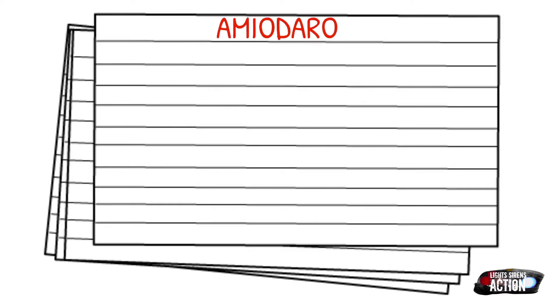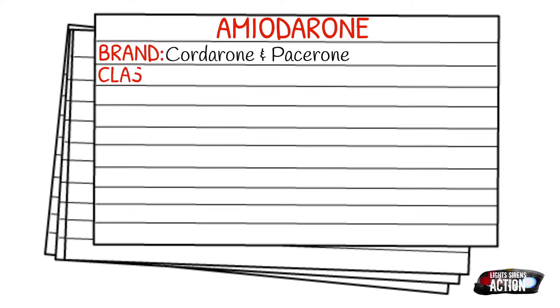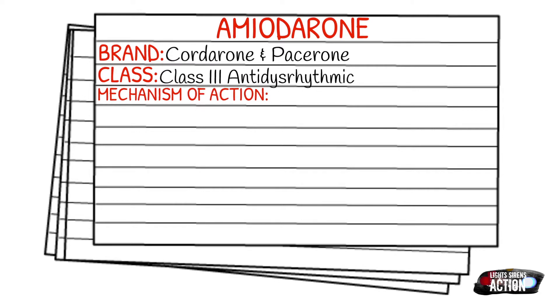Today's medication is called amiodarone. A couple of brand name examples are Cordarone and Pacerone. It falls under the class of Class 3 anti-dysrhythmics. The mechanism of action — how it works in the body — is that it blocks the potassium channels and also interferes with the calcium and sodium channels. This increases the action potential and decreases AV conduction, essentially slowing down the heart rate.